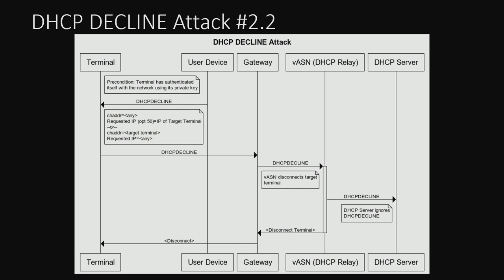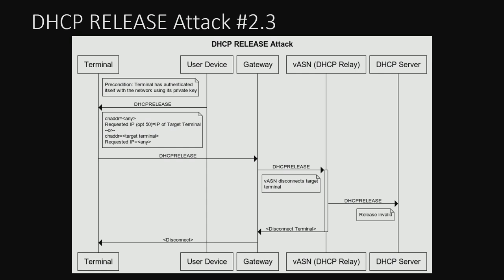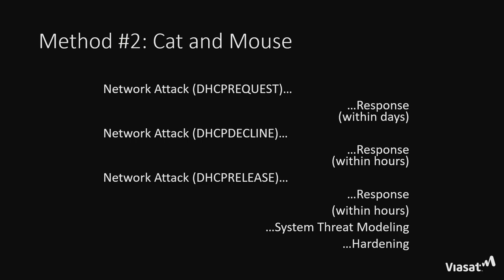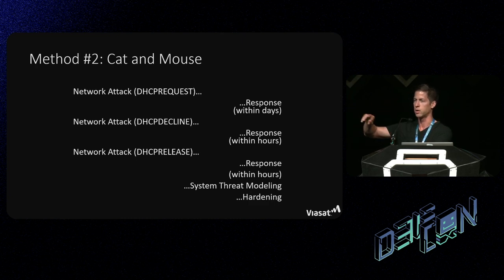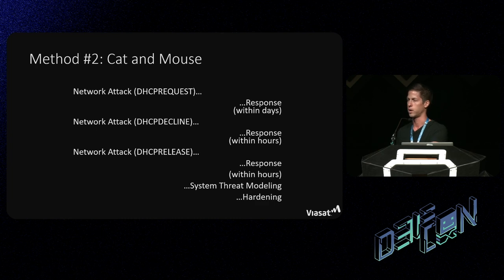There's a second variant — a DHCP decline attack — which issues a DHCP decline for a target terminal. That confuses the VASN into disconnecting that terminal. We responded and disabled this request. And lastly, the same type of attack but through a DHCP release method as well. This was a cat-and-mouse game from a response standpoint — we saw a DHCP request attack, then a DHCP decline attack, then a DHCP release attack. Every time we made a change, within days we'd see a response, and later within hours as we got better. The attackers had ways of testing and observing the changes we made and responded pretty quickly.